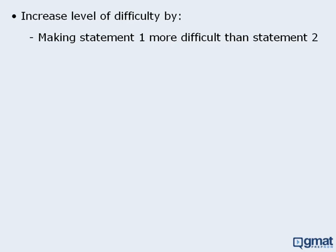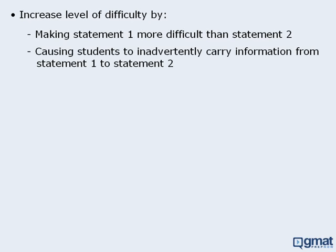The second way that test makers can take advantage of the fact that students typically examine statement 1 first, is to write statement 1 in such a way that it causes some students to accidentally carry information from statement 1 over to statement 2, and thus cause these students to answer the question incorrectly.